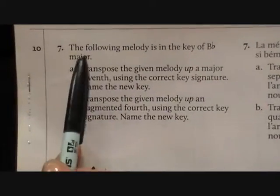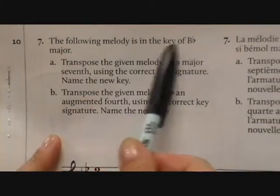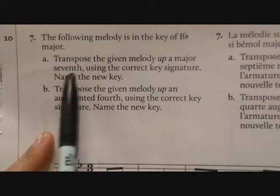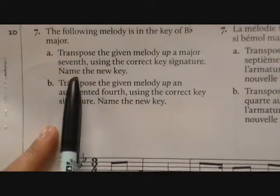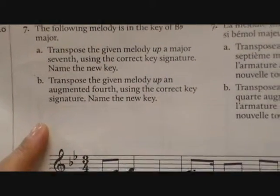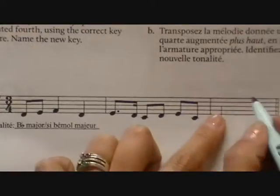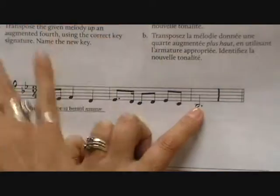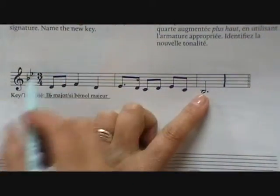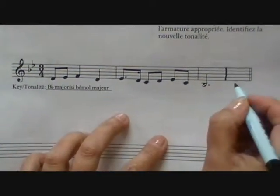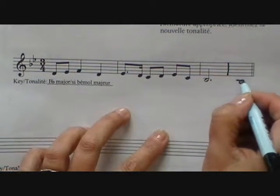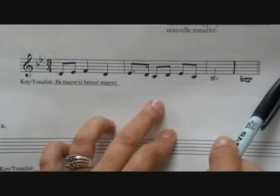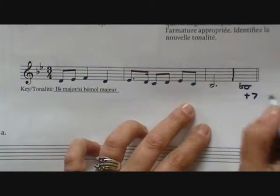Question 7 is asking: the following melody is in the key of B flat major. Transpose the given melody up a major 7th using the correct key signature, and then name the new key. What we have to do is create this as an interval question — make this an interval question. So they gave you the key: B flat major. We're going to write that in. This you'll erase after; it's just for yourself. We have to make a major 7th.